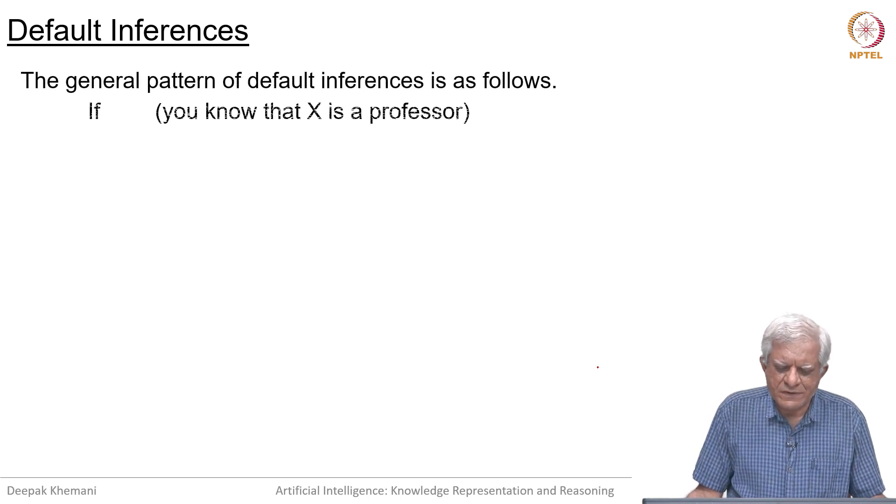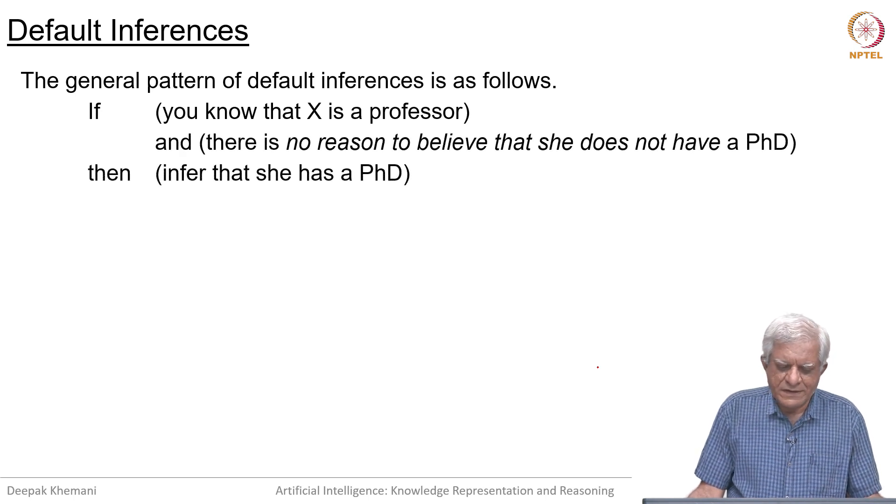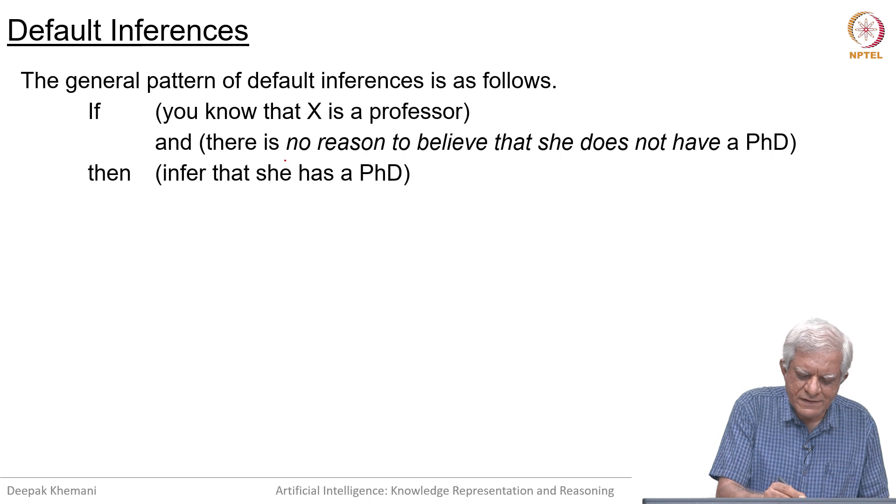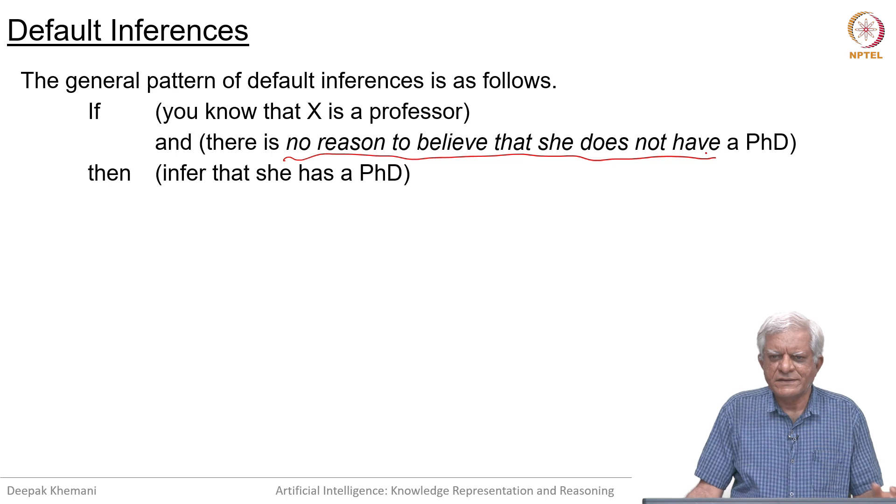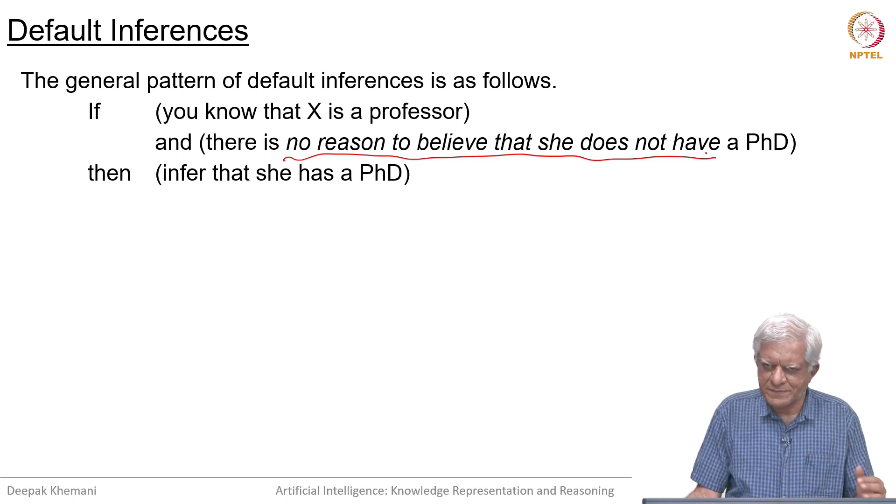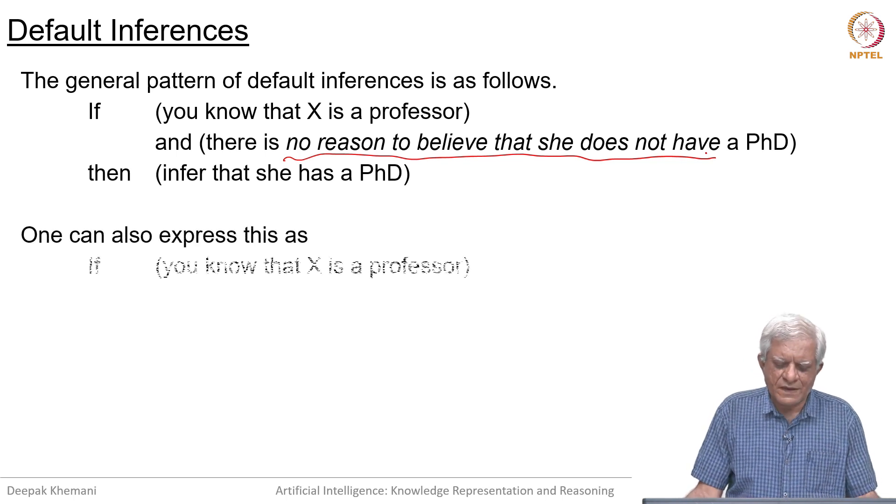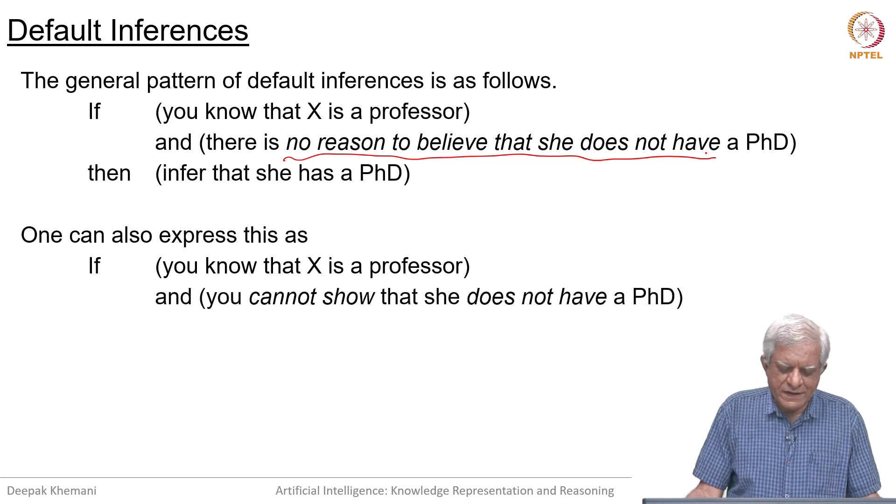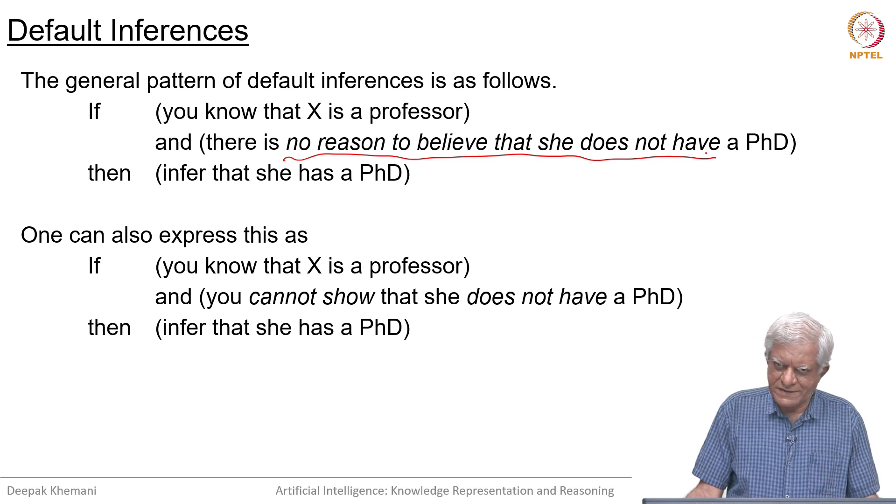The general pattern of default inferences is as follows. If you know that x is a professor and there is no reason to believe that she does not have a PhD, then infer that she has a PhD. The important thing is that unless you know otherwise, then typically you would say if x is a professor, then x has a PhD essentially. We can also rephrase this as follows: you can say that if you know that x is a professor and you cannot show that she does not have a PhD, then infer that she has a PhD.